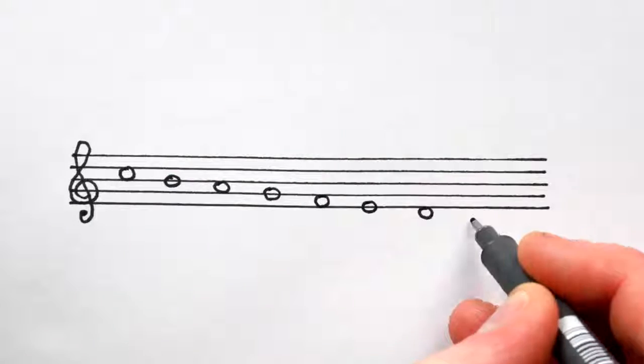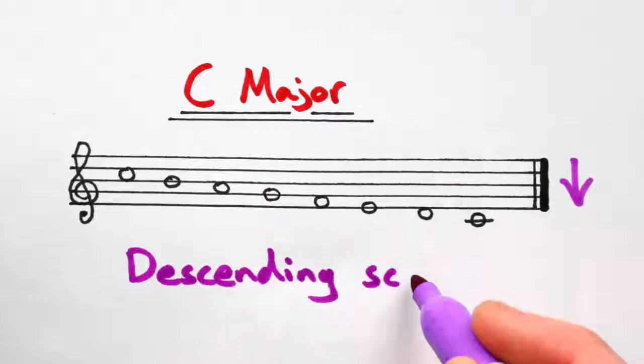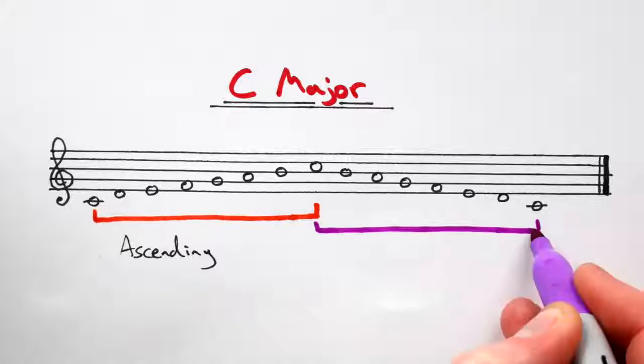We have what's known as C major ascending. Draw the notes going down. And we'll have C major descending. But of course, most musicians play their scales both ascending and descending.